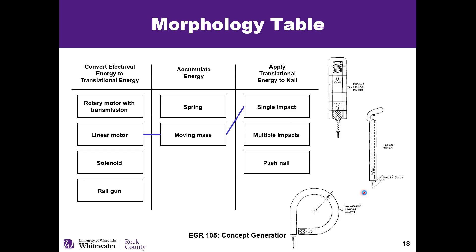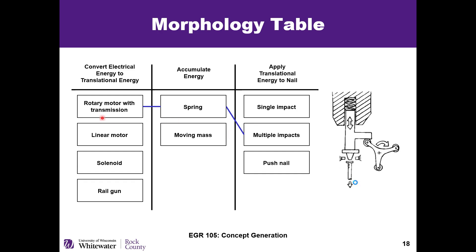Here's another example: we could use a linear motor with a moving mass and do a single impact. The linear motor drives this mass around and slams it in, or brings it up and back down into the nail in one big impact. We could also use a rotary motor with a transmission and spring with multiple impacts — going around and around, and as it goes up and down it impacts the nail multiple times.